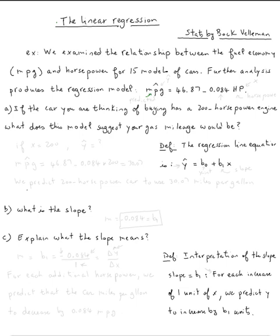So this is expected or predicted miles per gallon. Predicted miles per gallon is equal to 46.87 minus 0.084 horsepower.